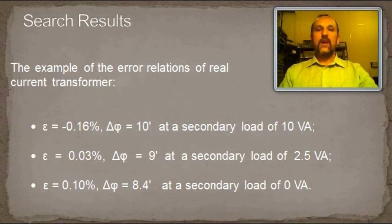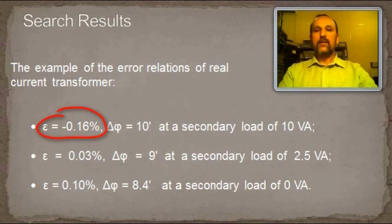The current transformers are designed in such a way that ratio error is negative at maximum load, and it is positive at 0 load. In such case, the phase displacement will most often have the same sign.